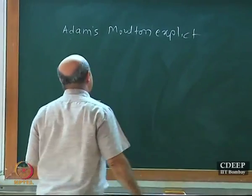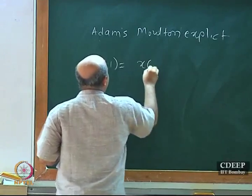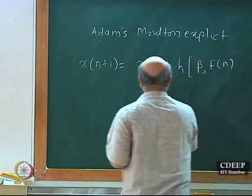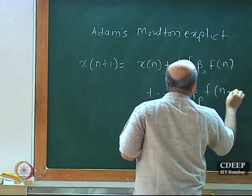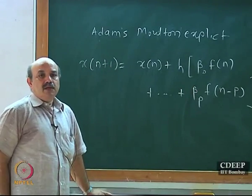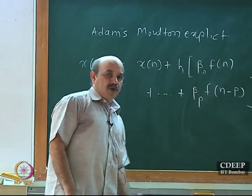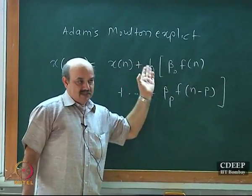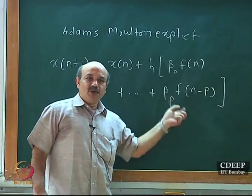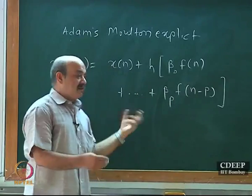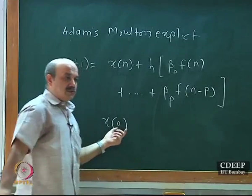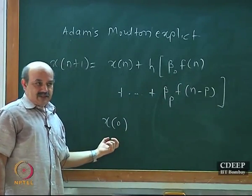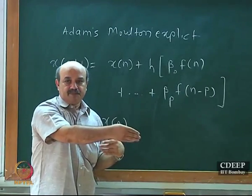Adams-Bashforth explicit method finally looks like: x_{n+1} = x_n + h(beta_0 * f_n + ... + beta_p * f_{n-p}). The problem arises at time 0 — you do not know what the past derivatives are. One simplification is to assume that x_0 was also prevalent in the past, so at all past instances before 0 you compute the derivative using x_0. The problem will vanish after p steps.